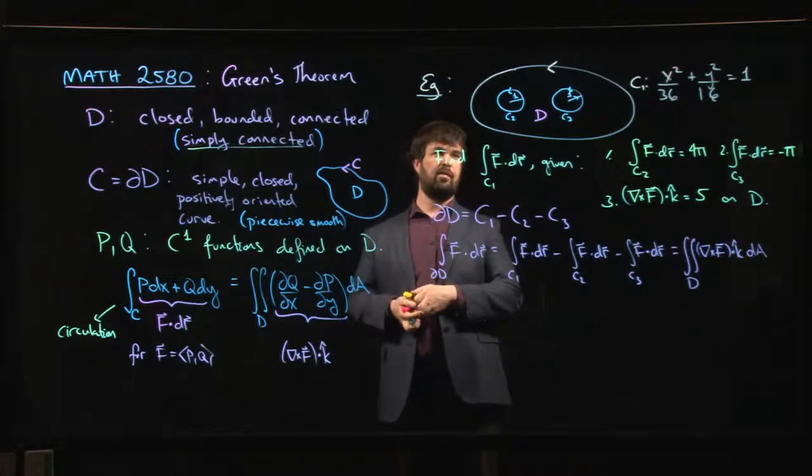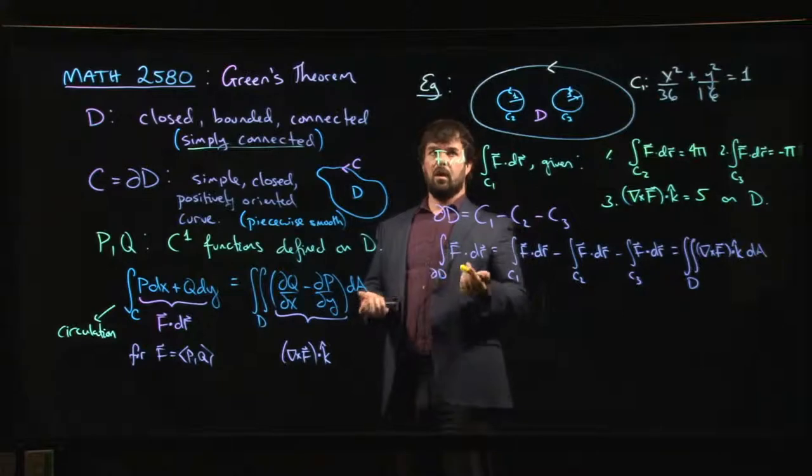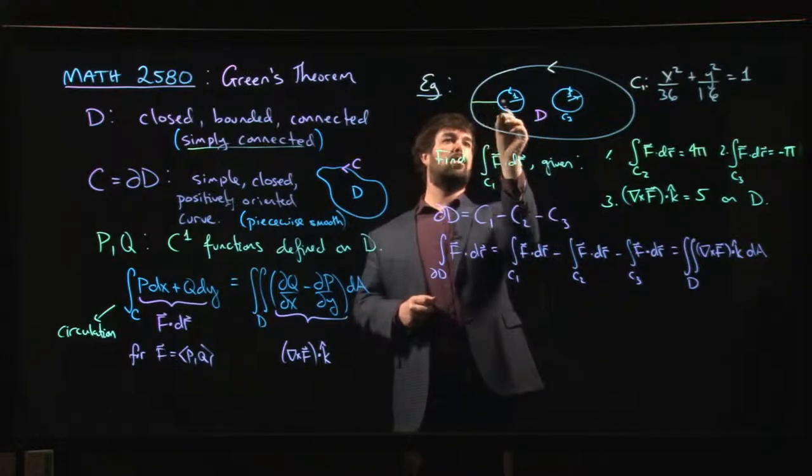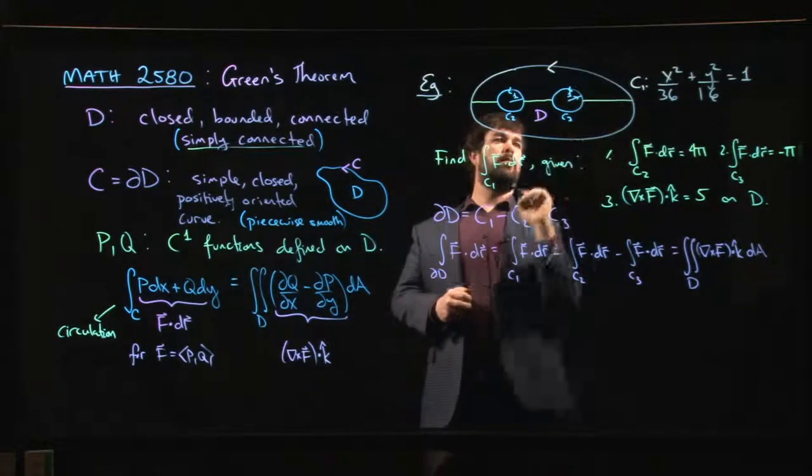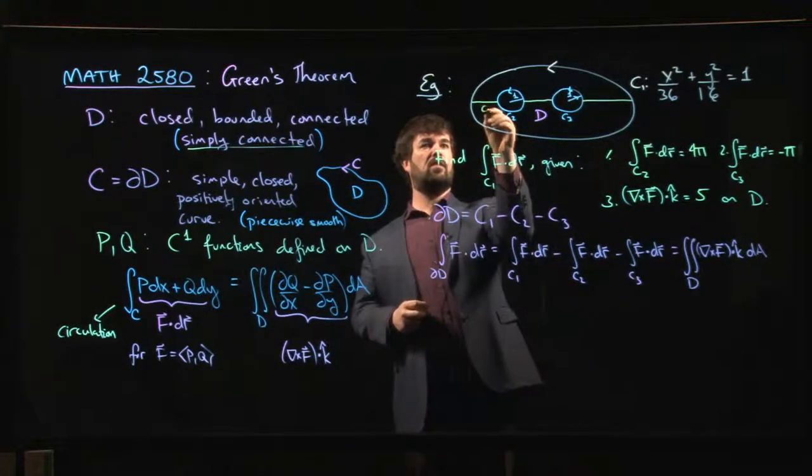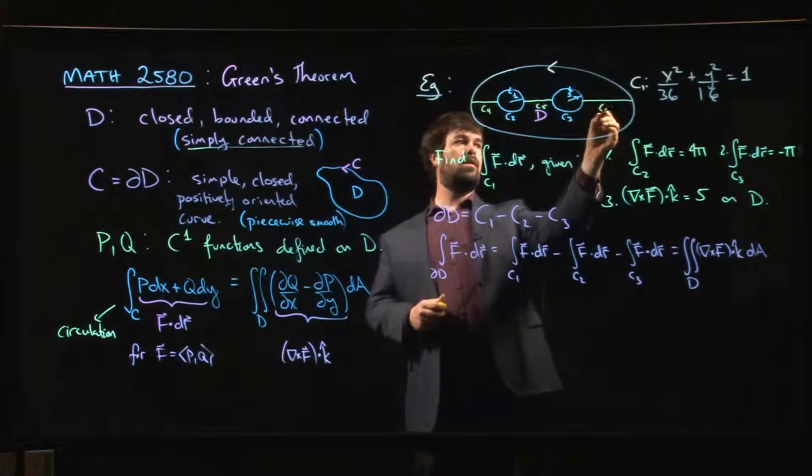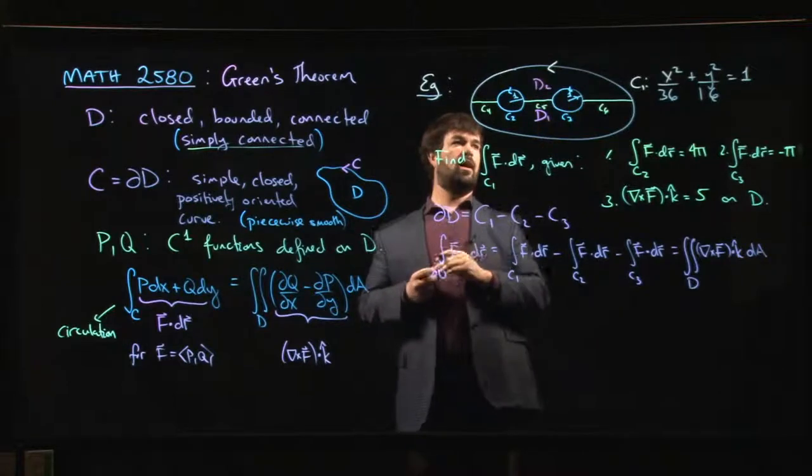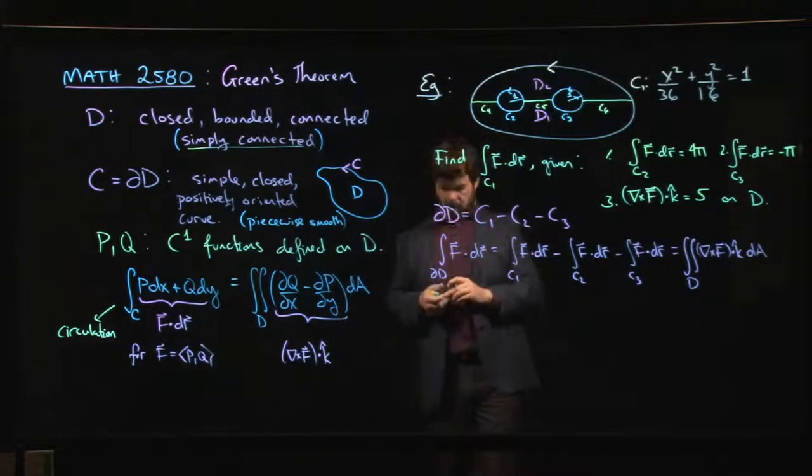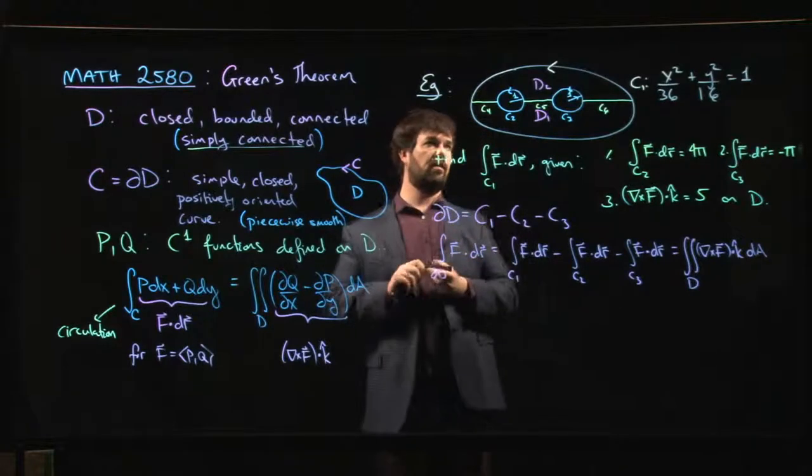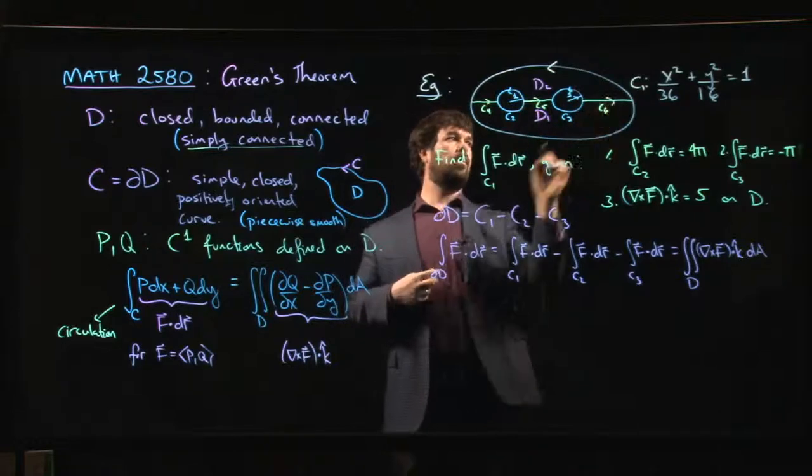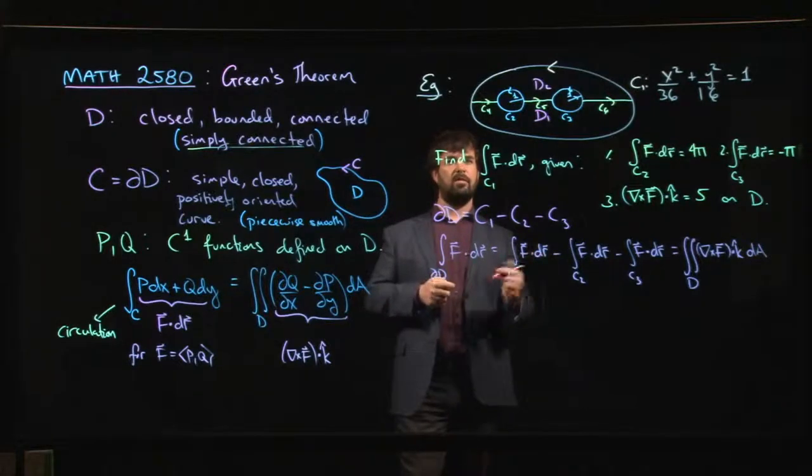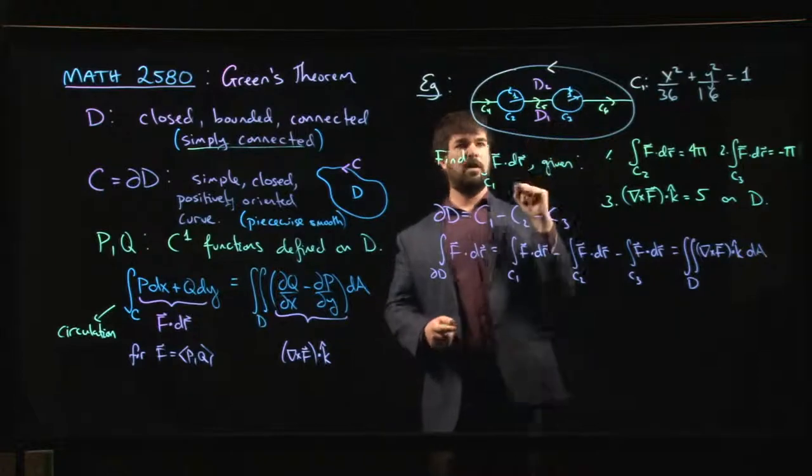First let's make sure we understand why can we apply Green's theorem in this case. This is not the sort of region where Green's theorem really applies. Well, the idea is that you can make some cuts. So we might make cuts like this, and maybe we call these C4, C5, C6, and then this region below the cuts, let's call that D1. Let's call this region above the cuts D2. D1 and D2 are both simply connected regions.